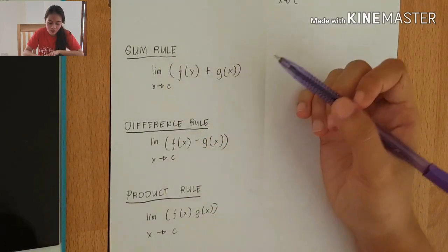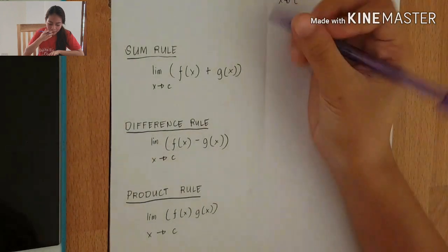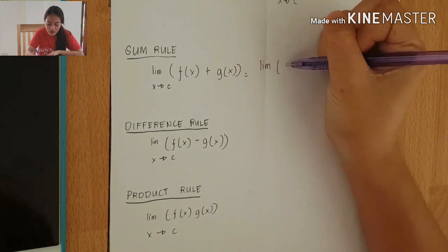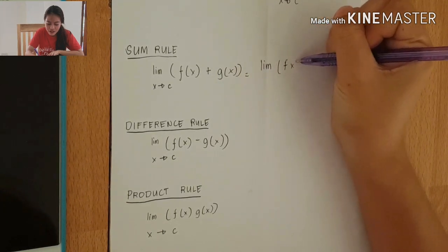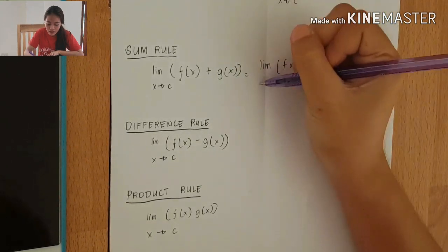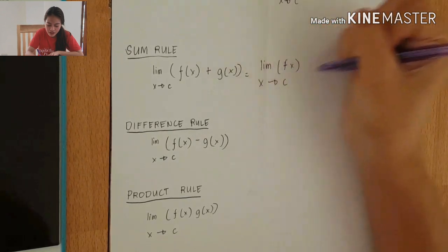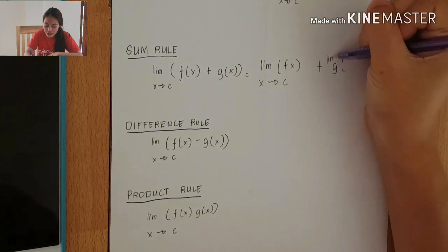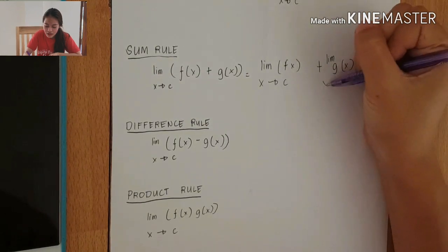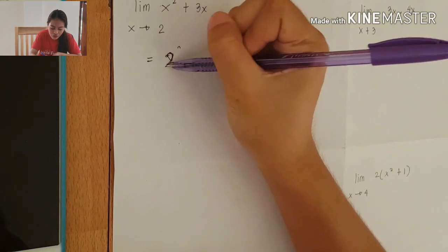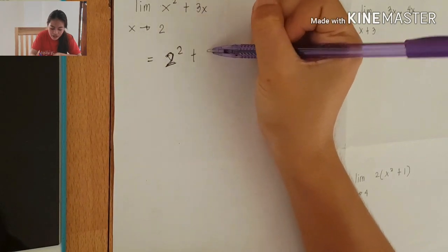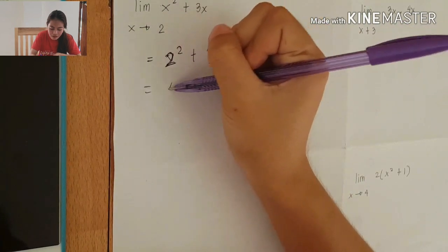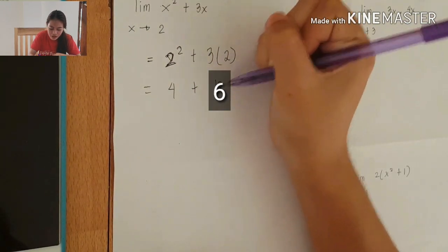One of the rules of properties of limits is the sum rule. The limit of f(x) plus g(x) as x approaches c equals the limit of f(x) plus the limit of g(x), which equals L plus N. For example, 2 squared plus 3 times 2: 2 times 2 equals 4, plus 3 times 2 equals 6, so 4 plus 6 equals 10.